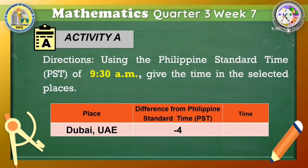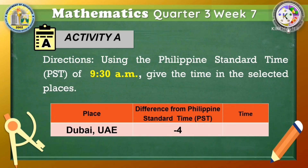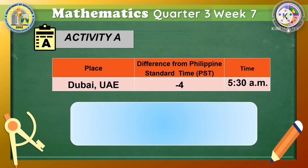I believe you are now ready for challenging activities. Let's apply what you've learned by answering the following exercises. Let's start with Activity A. I am going to give you an example and you will accomplish the 5-item test after. Using the Philippine Standard Time of 9:30 AM, give the time in the selected places. What is the time in Dubai if it is 4 hours behind? If your answer is 5:30 AM, excellent! Your answer is correct.